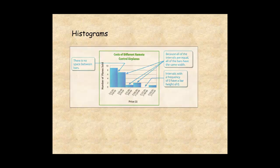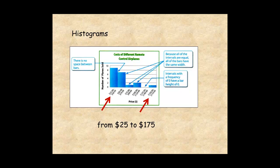This histogram shows prices of remote-controlled model airplanes. The prices range from $25 to $175, divided into six intervals, each $25 wide. The height of each bar indicates how many prices fall within that interval.